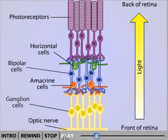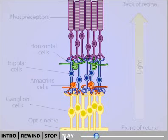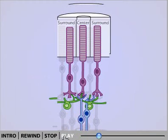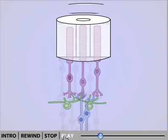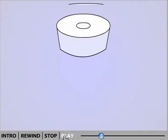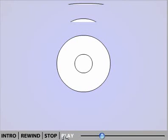The bipolar cells and ganglion cells are organized in such a way that each cell responds to a small circular patch of the retina, which defines the cell's receptive field. The receptive fields of retinal ganglion cells are concentric, consisting of a roughly circular central area and a surrounding ring.